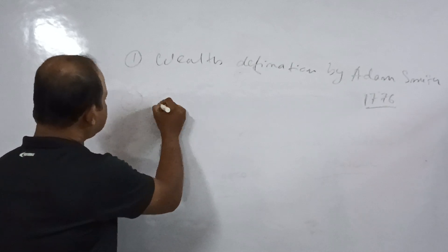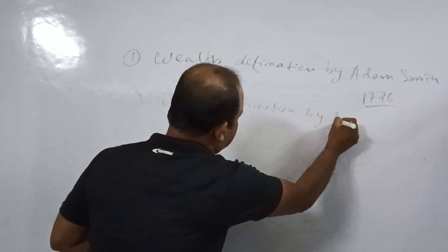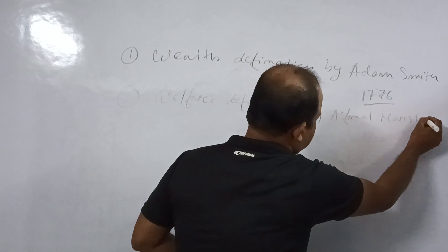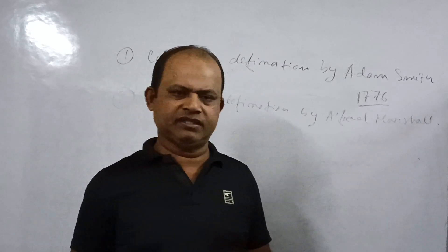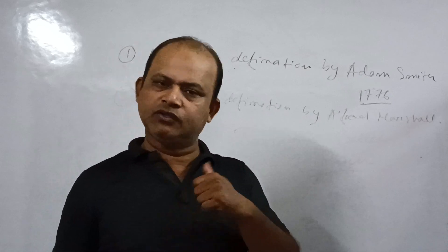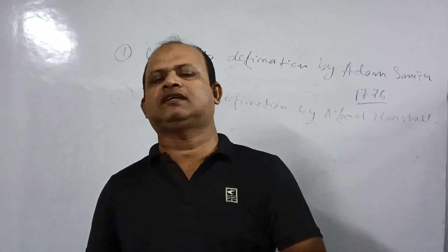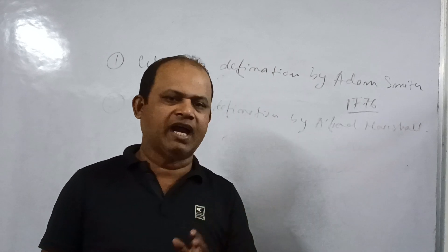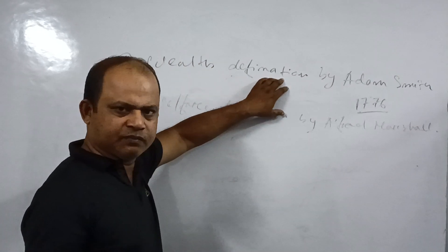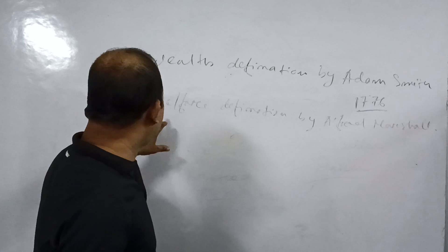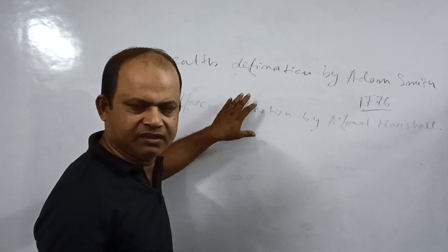The second definition is the Welfare Definition, given by Alfred Marshall. Marshall added something new alongside Adam Smith's definition. Marshall said that economics is the study about the wealth of a nation as well as the welfare of its people. Remember that in between Adam Smith's and Marshall's definitions, hundreds of other definitions came and went, but these two are widely accepted.